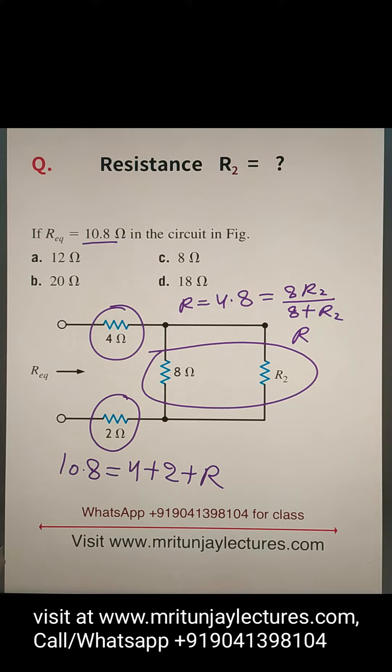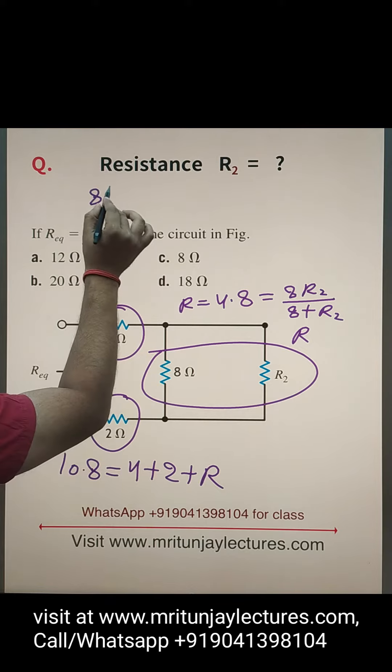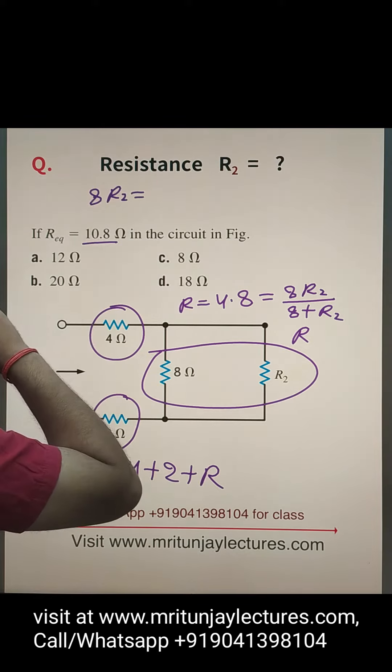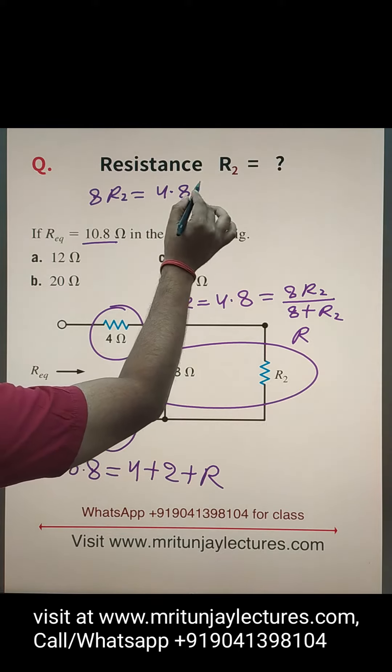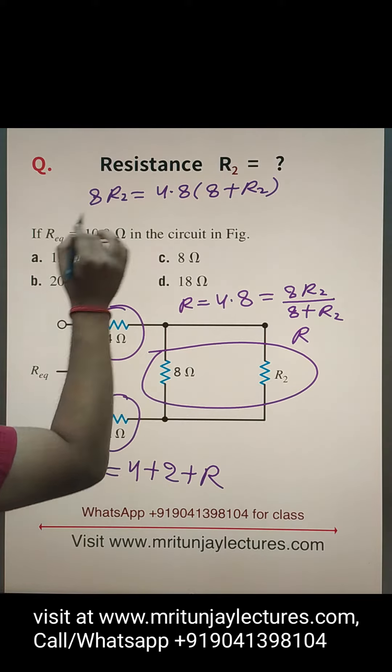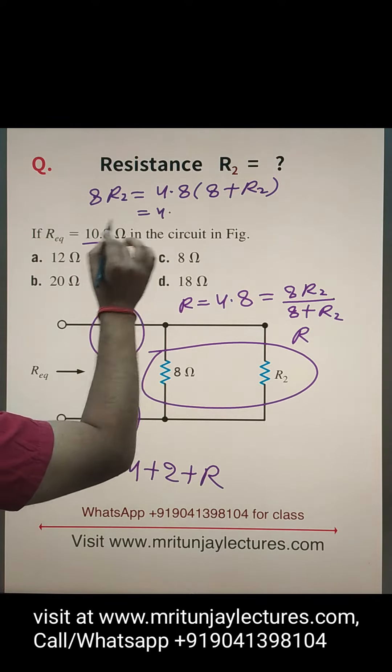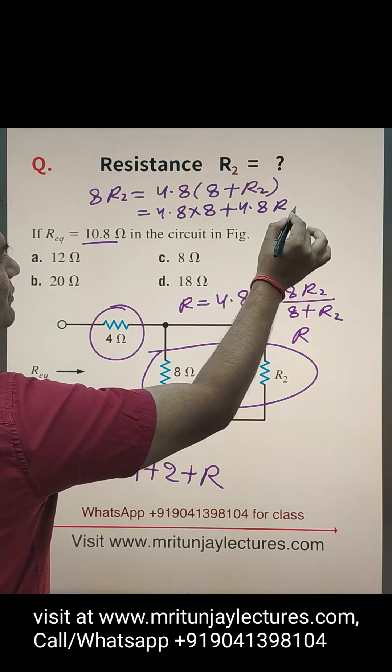After that, how can we solve? So this one is written: 8R2 equals 4.8 into 8 plus R2. 4.8 into 8 plus 4.8 into R2.